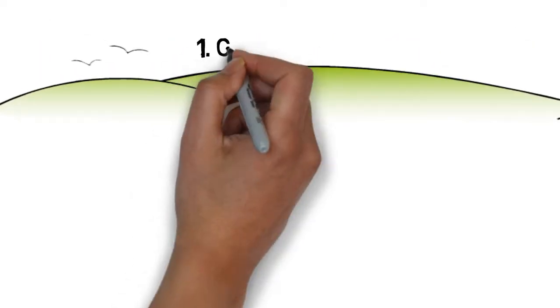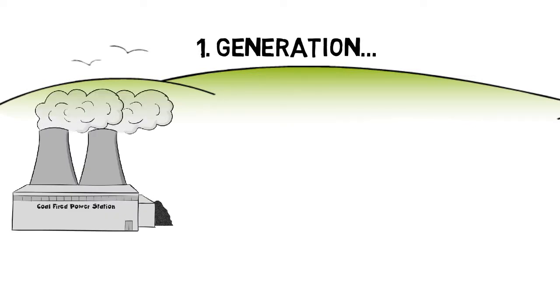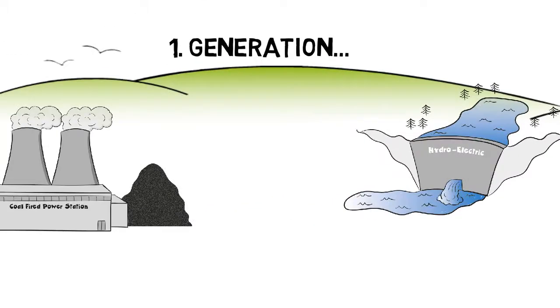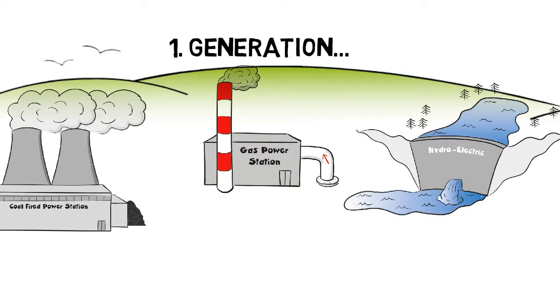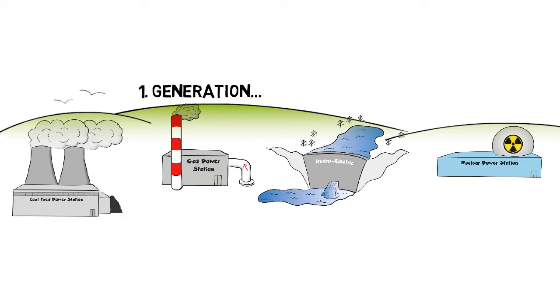The first stage of this journey begins with the generation of electricity. Electrical energy is created by converting heat or mechanical energy into electricity. The conventional electrical generating stations in the UK are co-fired power stations that convert steam to electrical power, hydroelectric power stations that convert mechanical energy into electrical power, gas power stations that convert steam to electrical power, and nuclear power stations that convert steam to electrical power too.